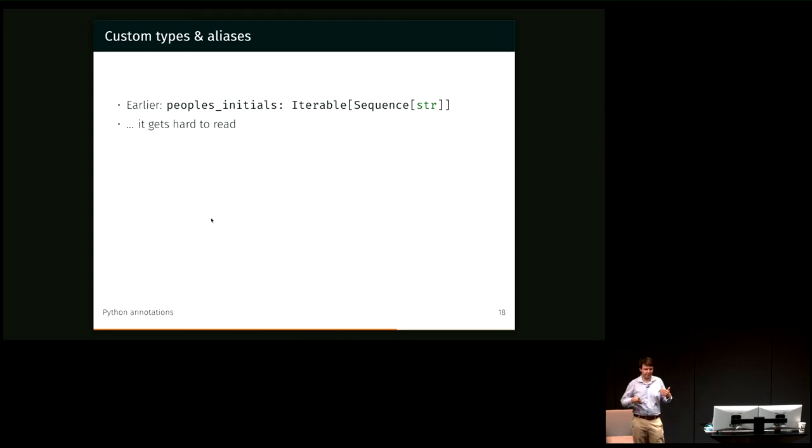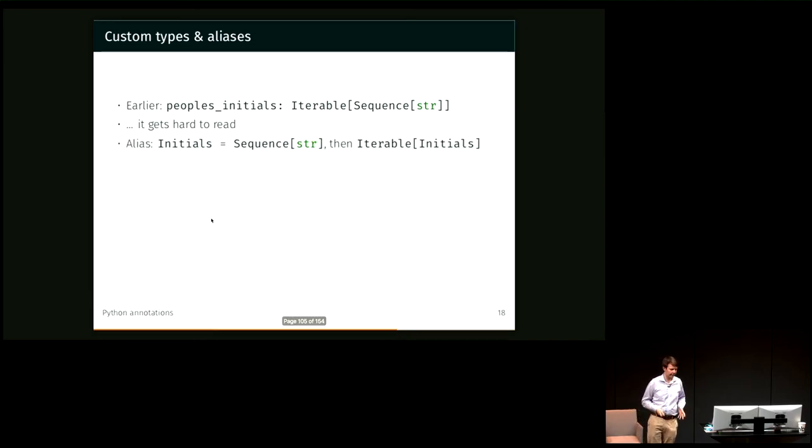So when we start to nest these together more deeply, it can get a bit hard to read. We saw people's initials, which is an iterable of the sequence of string, and if we start to do something that has people's initials inside, it's going to get really long really quickly. So we might want to alias initials to be sequence of string, and then we can just say that people's initials is an iterable of initials. That's much nicer.